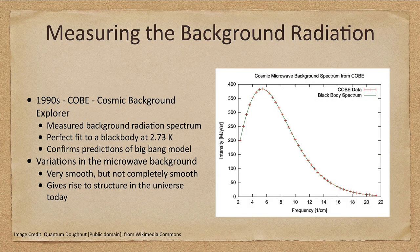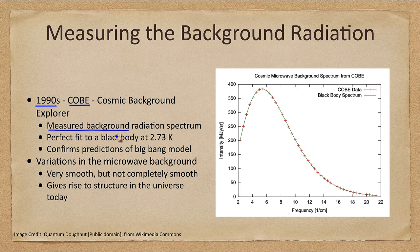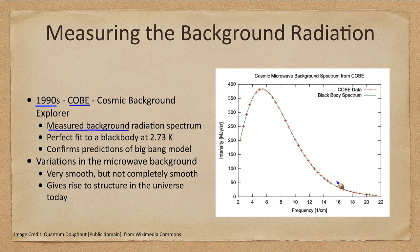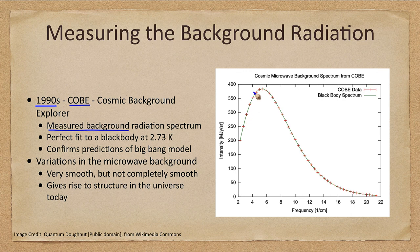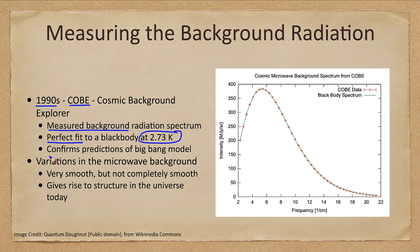So how do we measure the background radiation? In the 1990s, we had COBE, the Cosmic Background Explorer, which measured the background radiation spectrum. Here we see the data. The black body spectrum fit to this is in green. The data recorded by the satellite are in red. As you can see, they are an almost exact fit—a perfect fit to a black body at 2.73 Kelvin, confirming the predictions of the Big Bang model.